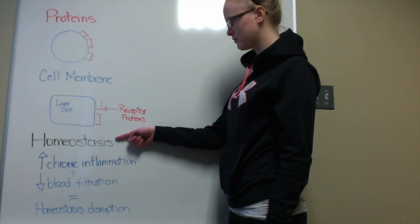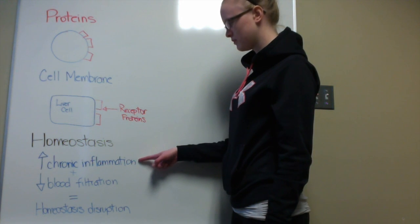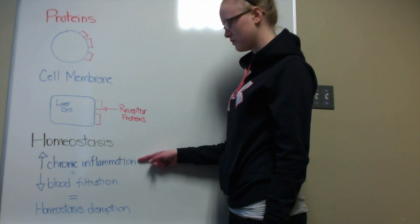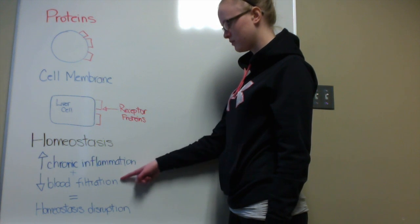Homeostasis is disrupted because of the chronic inflammation of the body from hepatitis C, which damages the liver in many ways. The increased inflammation causes scarring in the liver, which leads to decreasing filtering of the blood.